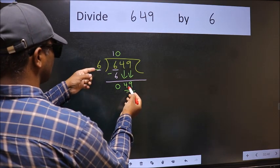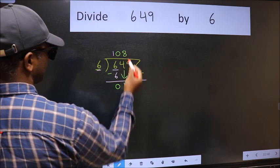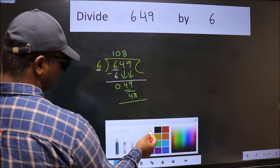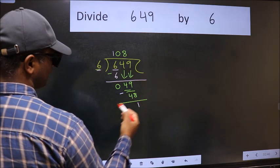A number close to 49 in the 6 table is 6 times 8, which is 48. Now we should subtract. We get 1.